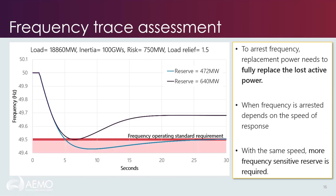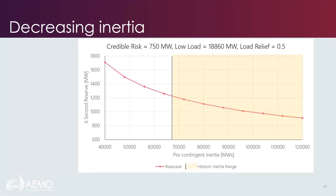As we vary the system conditions in line with actual changes in the system, we can summarize these reserve requirements on inertia reserve curves, starting with decreasing inertia. The base case inertia reserve curve is a great starting point to understand the impacts of decreasing online inertia levels. The six-second reserve requirement on the y-axis refers to the amount of frequency response reserve as measured at six seconds — the measurement point for our fastest contingency FCAS product. On the x-axis is pre-contingent inertia, which has an impact on how fast frequency will change following a disturbance. Other study parameters not being varied — such as the size of the risk, the load on the system, and any associated load relief — are given in the title.